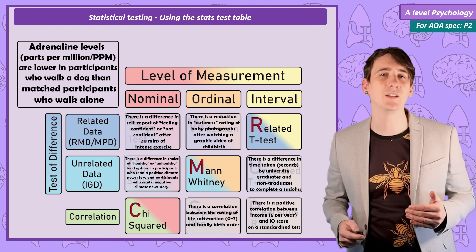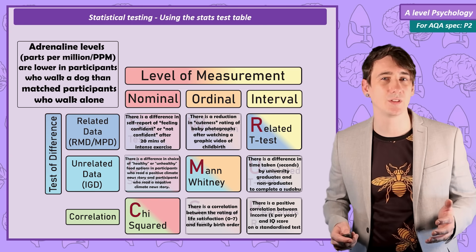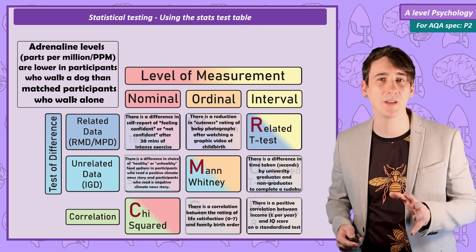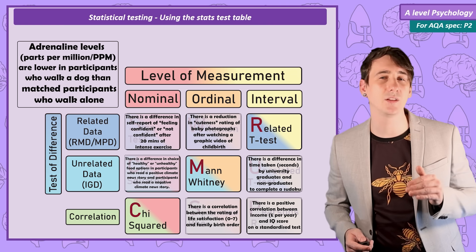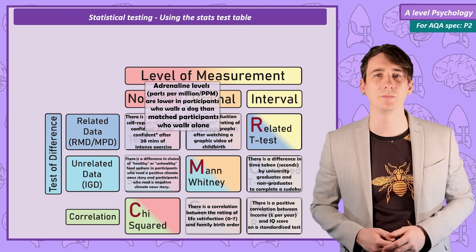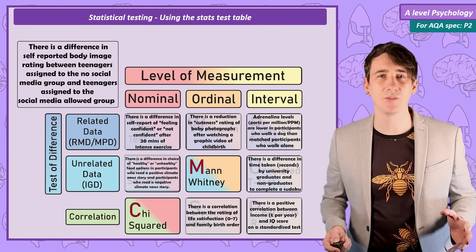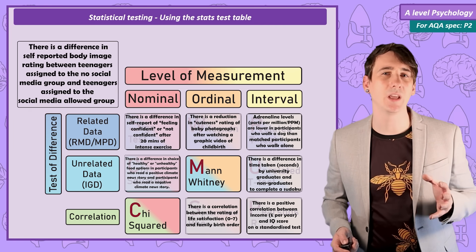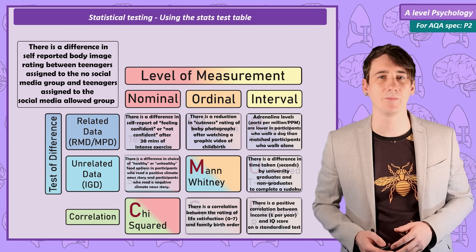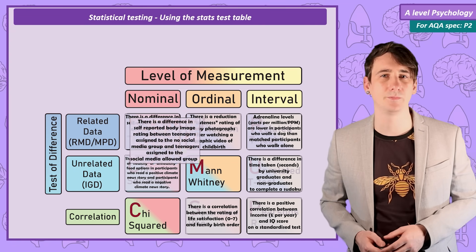Example 7: a related t-test. As an experiment, it's a test of difference. It's related data as it's a matched pairs design, and the data collected is at the interval level. Example 8: a Mann-Whitney. It's a test of difference using an independent groups design, so unrelated data. The data collected is at the ordinal level.